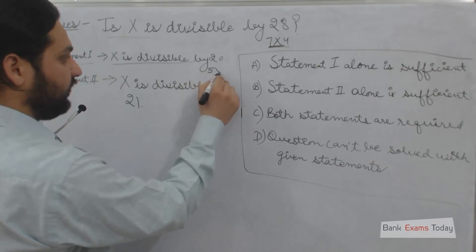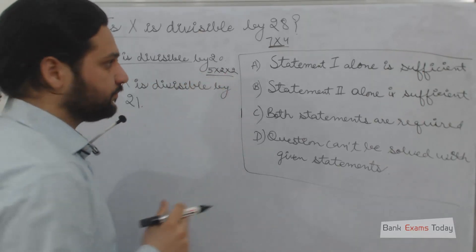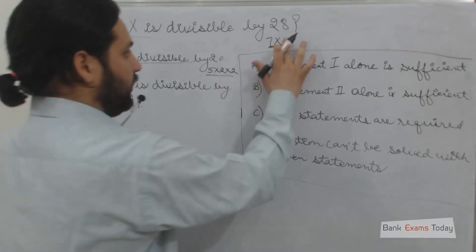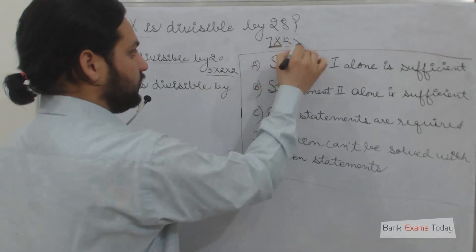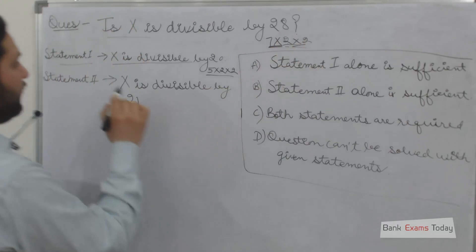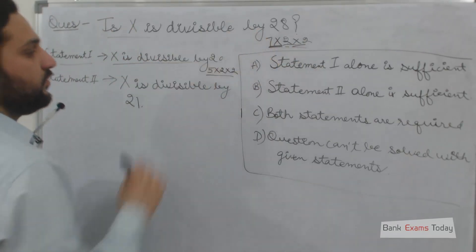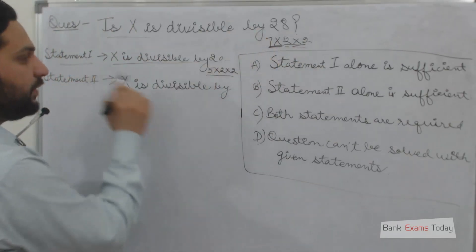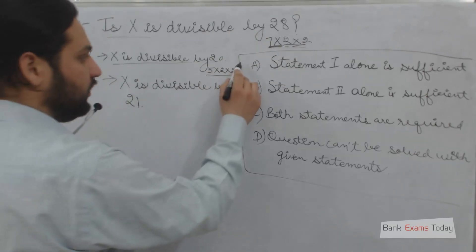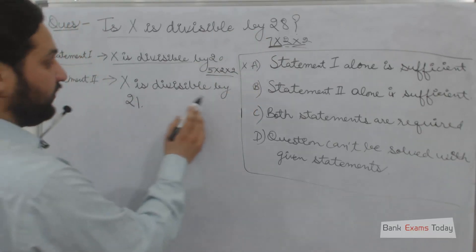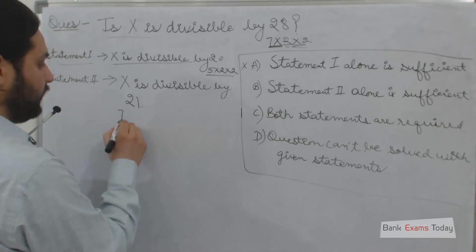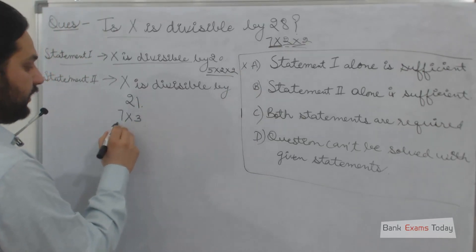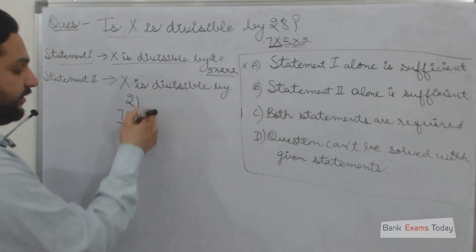20 is not divisible by 7, so statement 1 alone is not sufficient. Statement 2: X is divisible by 21, which is 7 multiplied by 3. Taking the LCM, 7 is common but 4 is not present. Statement 2 alone is also not sufficient to solve this problem.